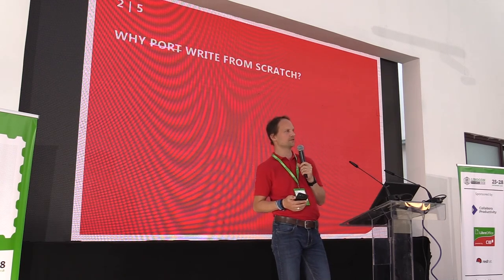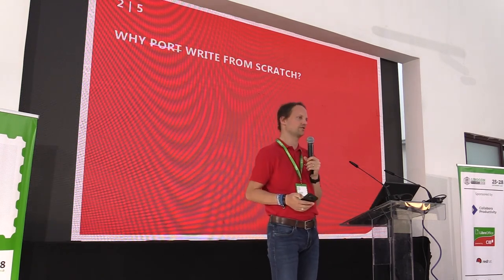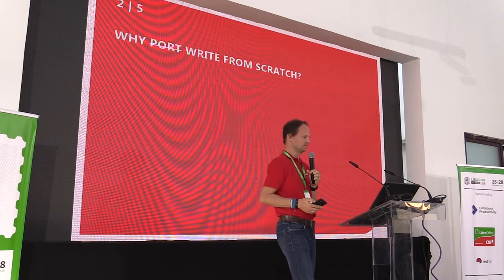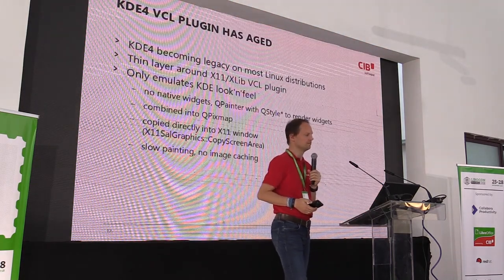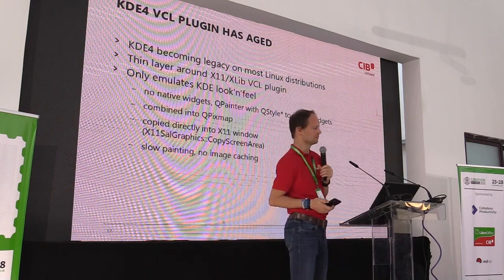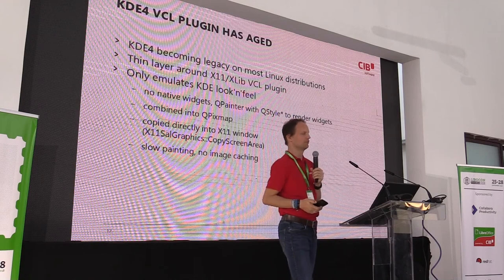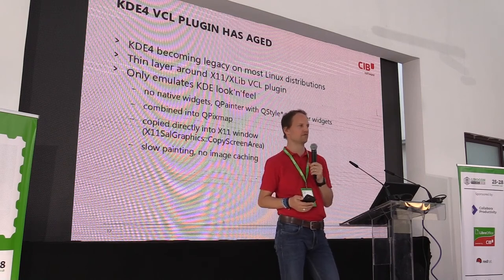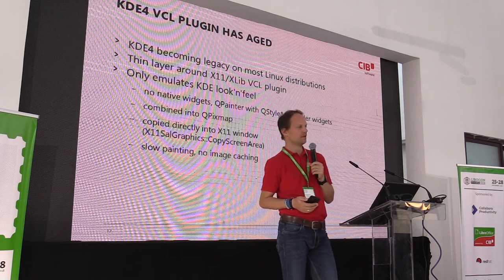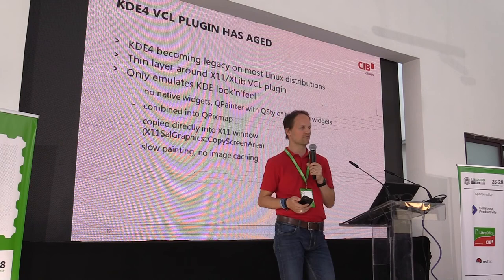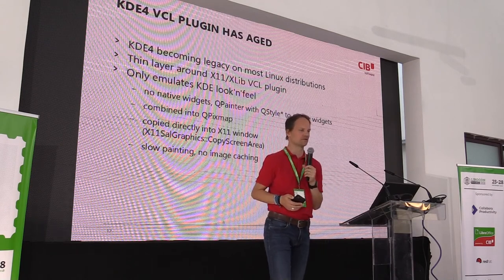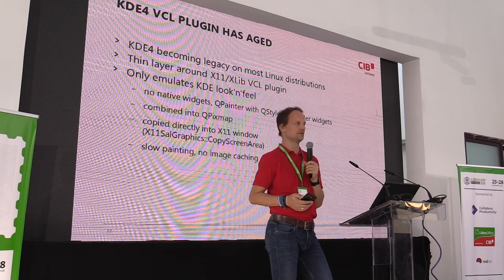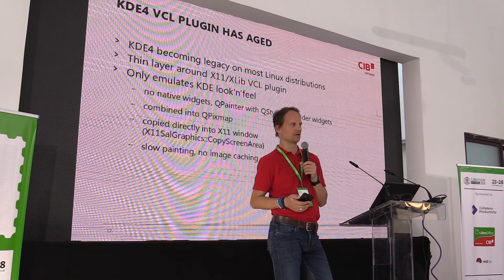There were two ways to address that. One was to just take KDE4, change what needed changing, and hopefully have something running on KDE5. There was another way taken instead — a complete rewrite from scratch, with a small footprint, as an intermediate version that went into 6.1. The plugin is called KDE5, which is essentially the GTK3 plugin with one exception: the file pickers are coming from KDE.